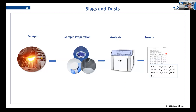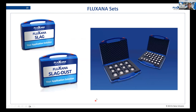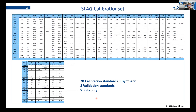So much for sample preparation. Now we will have a look at analysis and results. For analysis with XRF, you will need a calibration. The easiest way is to buy a ready-to-use calibration set. Fluxana offers a slag set and an extension for slag dust if you also want to measure filter dusts. These are sets of fused beads. You can also buy CRM material or have internal standards and set up a calibration yourself, which will just be more work.